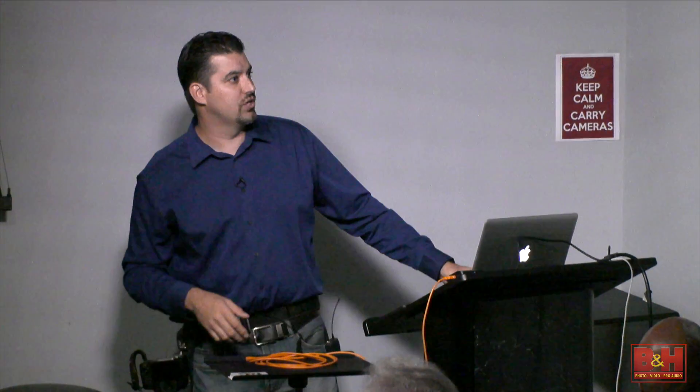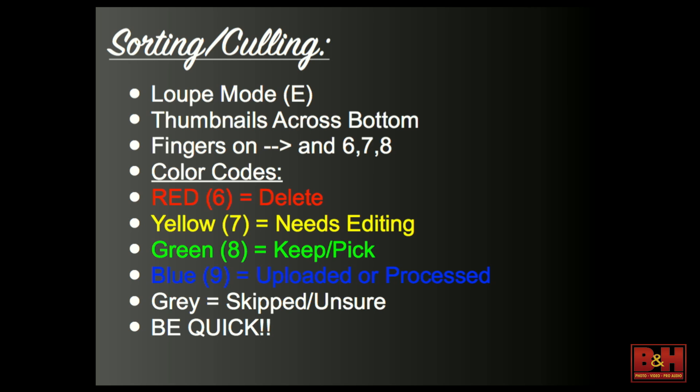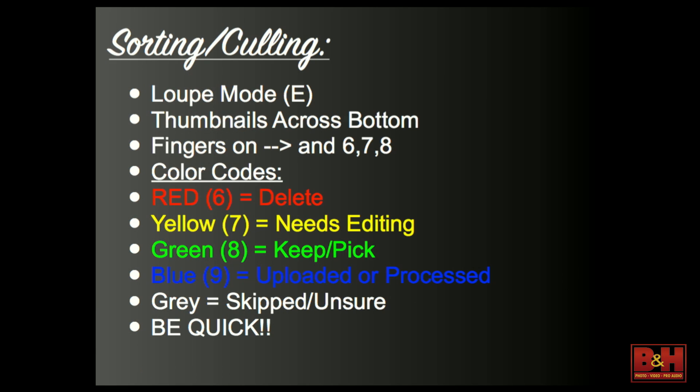So I go into loop mode, which is E — that's the enlarged view. The thumbnails are across the bottom. I put my fingers on 6, 7, and 8 — those are the numbers on the top of your keyboard. You can define these any way you see fit. I define them as: red is delete, yellow is needs editing, and green is keep or pick. I also have blue for when it's uploaded or processed — already on Fine Art America or SmugMug — so I know not to edit it again.